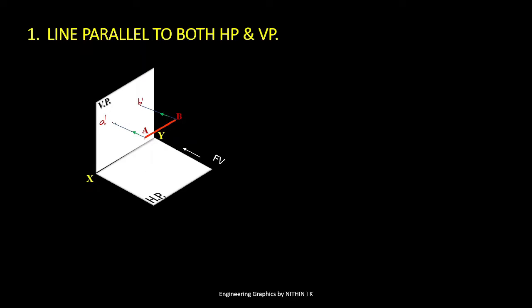The front view gives A dash B dash. For the top view, visual rays from A and B strike HP, giving top view points small a and small b.